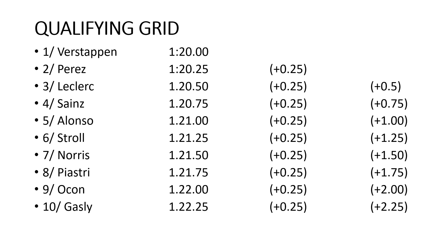That means when you get down to 10th, they're 2.25 seconds per lap slower than the leader. After two laps that 2.25 seconds becomes four and a half seconds; after 10 laps it becomes 22.5 seconds. Imagine running around an athletics track where you're gaining 10 meters per lap on the person in second — after the first lap you lead by 10 meters, after the second by 20, after the third by 30. Keep that principle in your head.